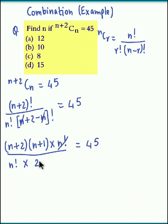So n factorial and n factorial gets cancelled off. Now we could multiply this 2 on the right hand side and we obtain n plus 2 into n plus 1 is equal to 90.